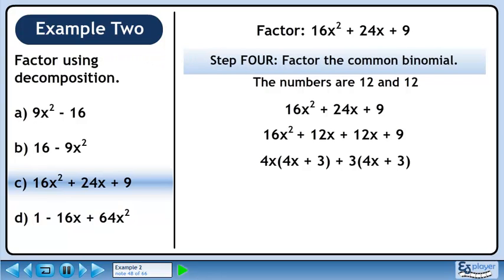In step 4, we'll factor out the common binomial. 4x plus 3 is common to both terms, so it can be factored out. The answer is (4x + 3)².